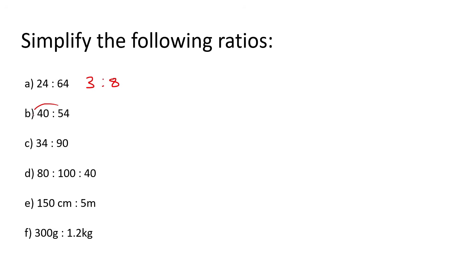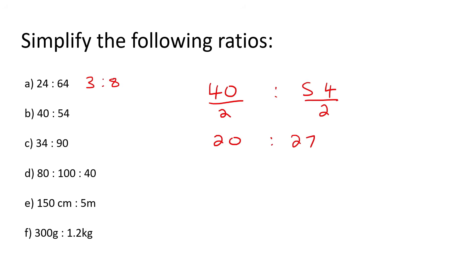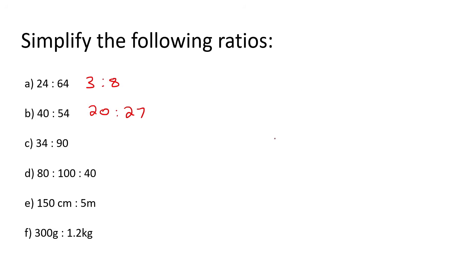Here we have 40 and 54. I can only think of two, so I'll go with that, giving me 20 and 27. There is actually no number that can go into both of those — that's quite interesting — so that is the final answer; it's literally the smallest it could ever become. Next, 34 and 90: dividing by two gives 17 and 45, and you can't go any smaller than that. So that's the answer.